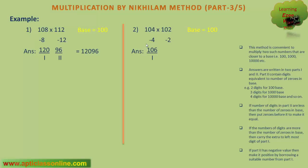Now the second part, written in continuation to the first part, is the multiplication of minus 4 and minus 2, that is, 8. This is the second part. But the second part must contain 2 digits, so we have to put a zero before it to make it a 2-digit number. So the answer will become 10608.